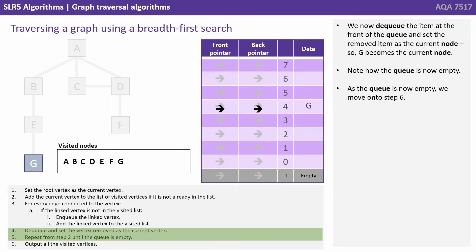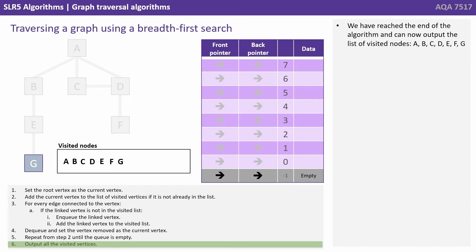We now dequeue the item at the front of the queue and set the removed item as the current node. So G is now the current node. Note now how the queue is empty. As the queue is now empty, we move on to step 6. We have reached the end of the algorithm, and can now output the list of visited nodes: A, B, C, D, E, F, and G.